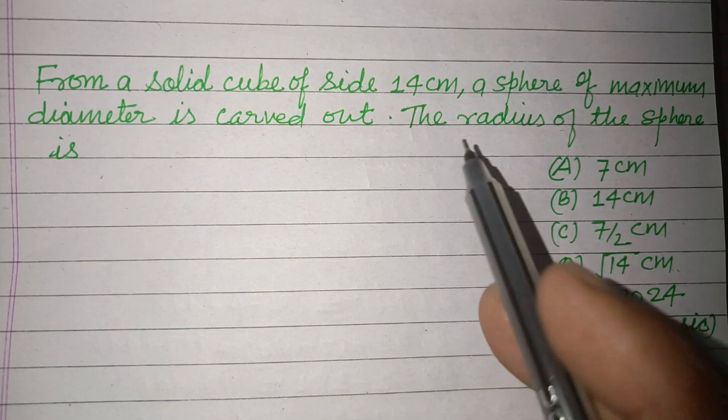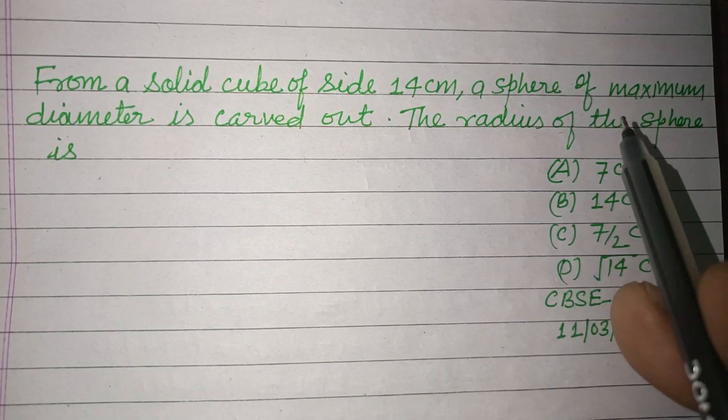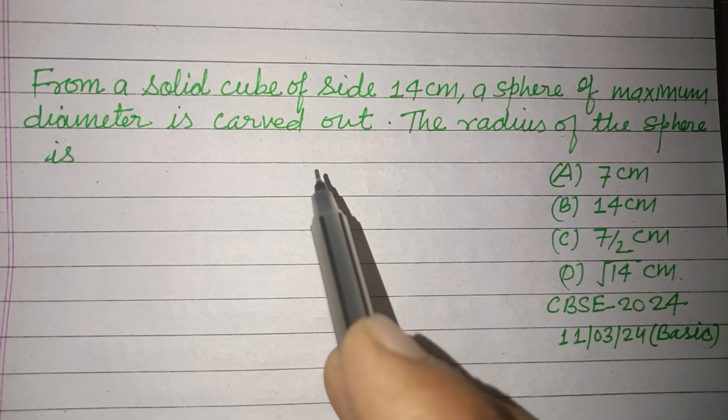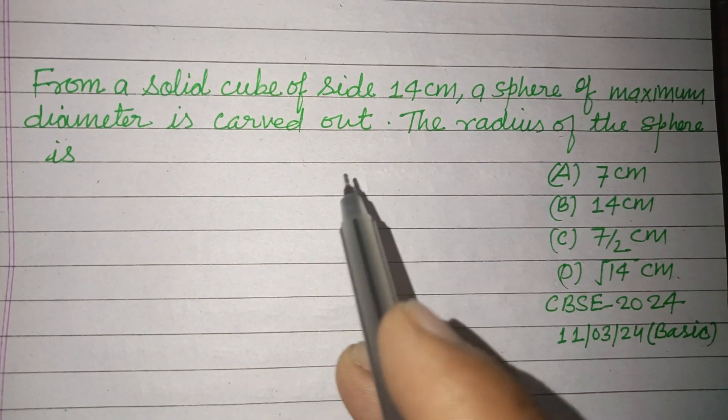From a solid cube of side 14 cm, a sphere of maximum diameter is carved out. The radius of the sphere is...